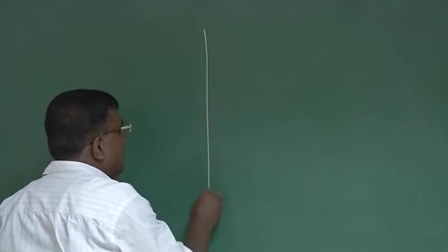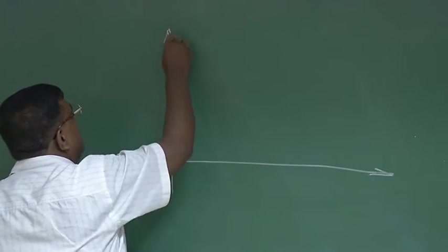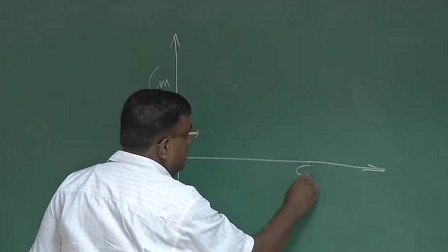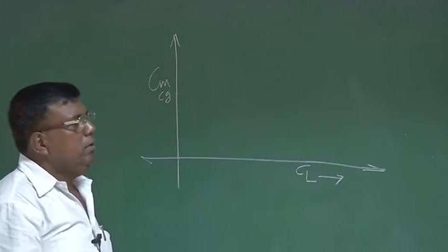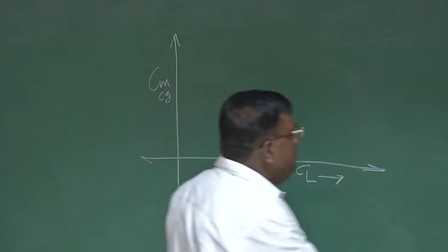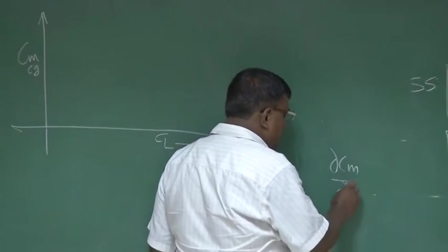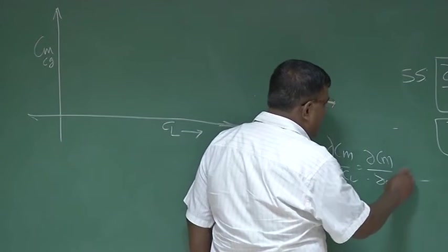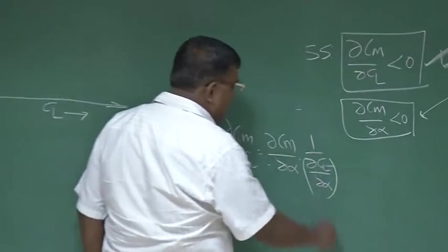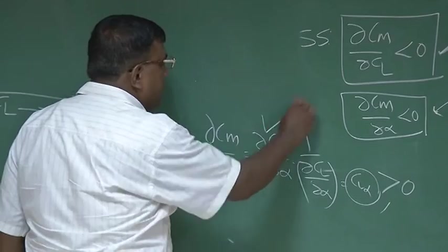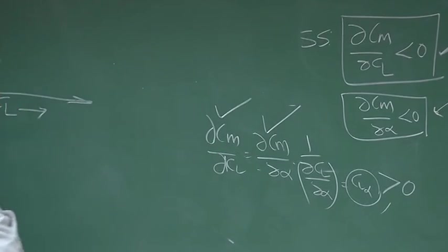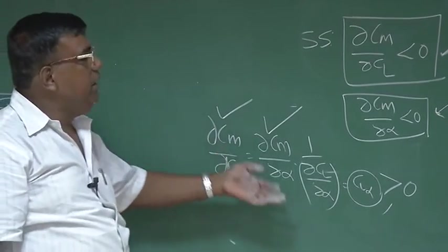Now let us also understand CM-CG versus CL. Please take note: I am now using CM-CG versus CL graph, which is equivalent — it is a little bit of numerical scale-up or scale-down — of CM versus alpha. For static stability, dCM/dCL should be less than 0, which is equivalent to dCM/dα < 0. You can see: dCM/dCL can be written as (dCM/dα) × (1/(dCL/dα)). In a linear domain, dCL/dα is CL-alpha, which is always positive. So whatever sign dCM/dα has, dCM/dCL will also have the same sign, because CL-alpha is a positive number. So it is just scaling — that is all.